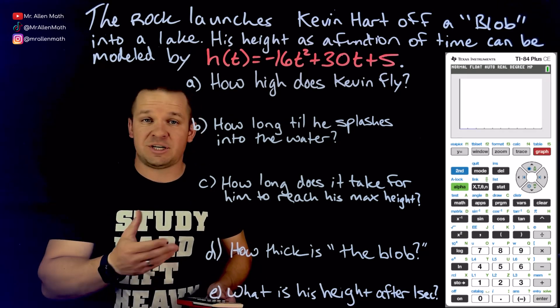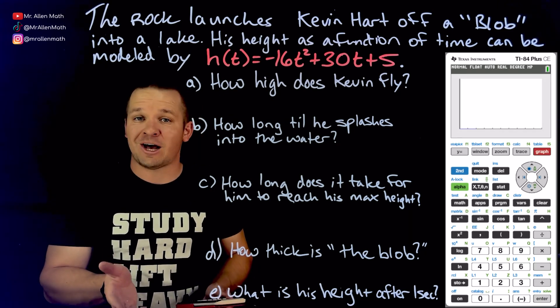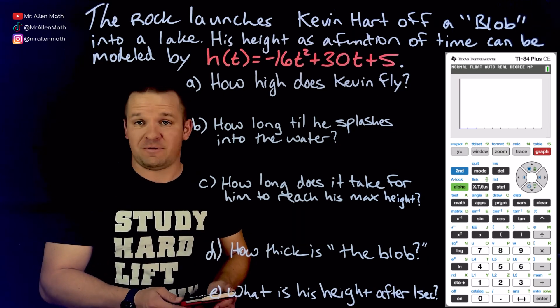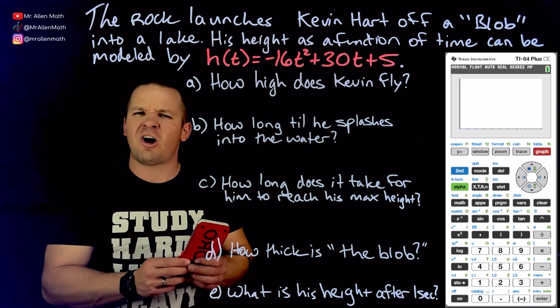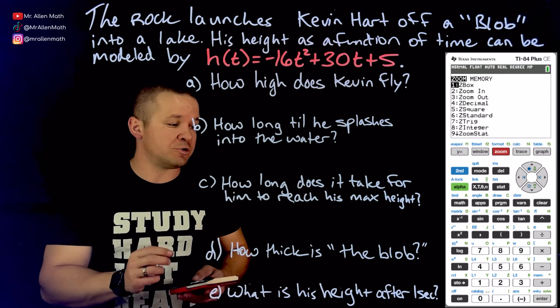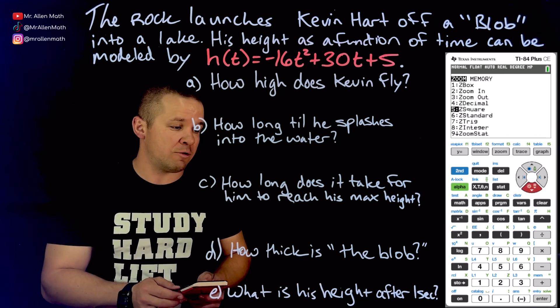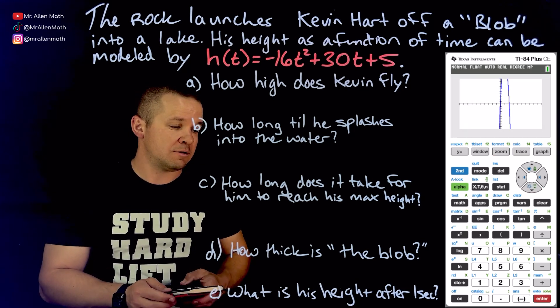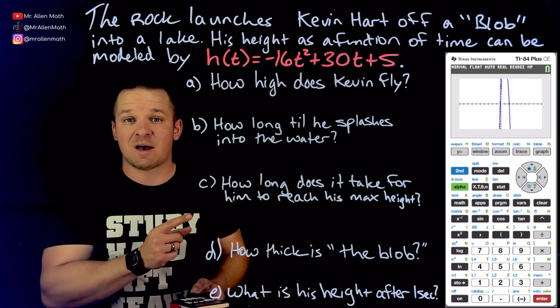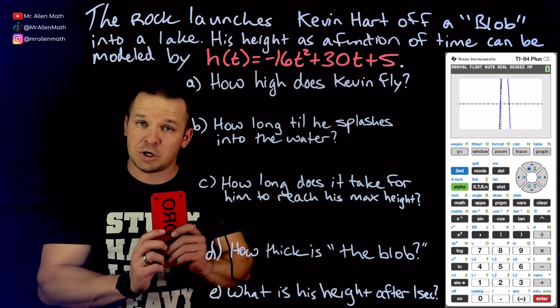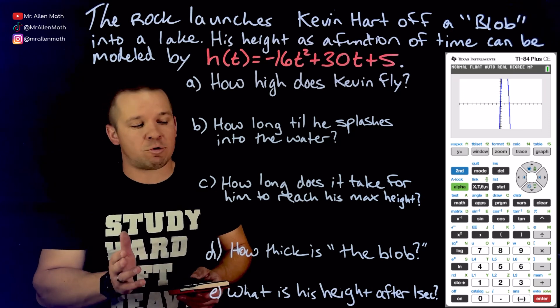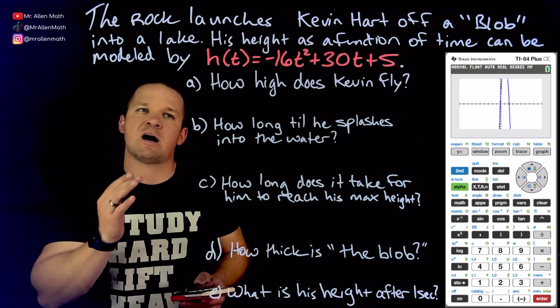Now, we can hit graph, and yours might look different than mine. Mine does not look good at all. I just hit graph. And your window's probably different. So if it is, if it looks a little funky, let's all do this. We're going to hit zoom, and then we're going to hit standard, which is option 6. So arrow all the way down, standard. Now I have this graph, and it might take yours a little bit longer to load. Now, it looks like I can see most of this quadratic function, but I don't see the high point, which is, that's the first question.